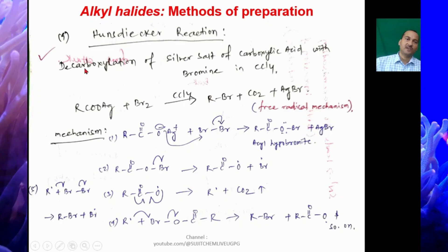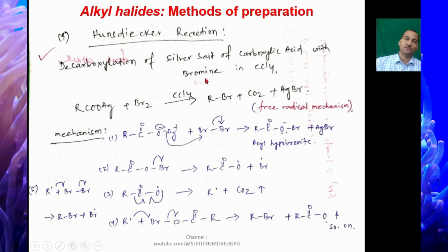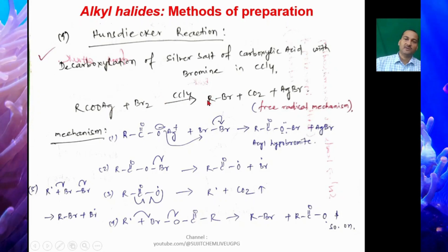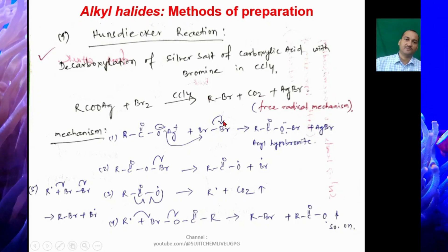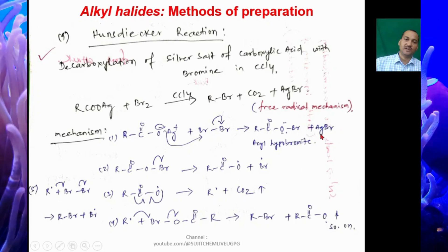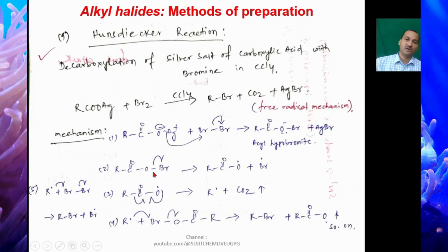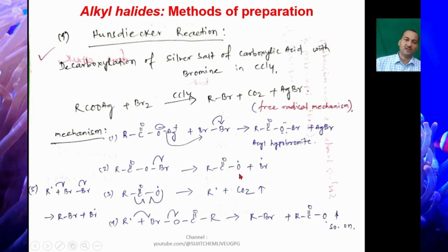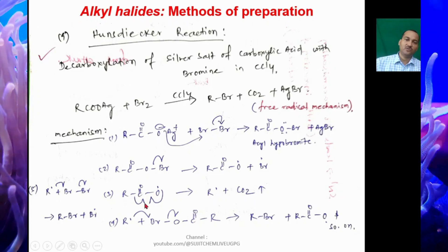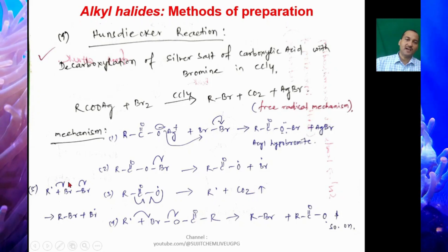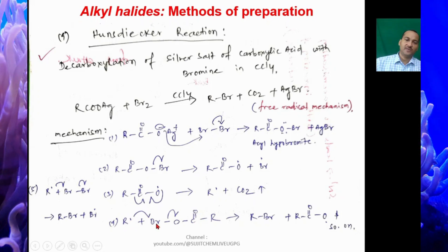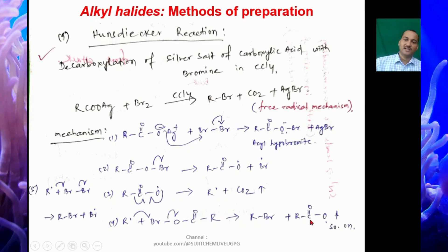The Hunsdiecker (Borodine) reaction involves decarboxylation of the silver salt of a carboxylic acid with bromine in carbon tetrachloride: RCOOAg + Br2 in CCl4 gives RBr + CO2 + AgBr. It follows a free radical mechanism. RCOOAg reacts with Br2 to give acyl hypobromite RCOOBR plus AgBr. This undergoes homolytic cleavage to give RCOO• and Br•. RCOO• loses CO2 by homolytic cleavage to give R• plus CO2. R• combines with Br• to give RBr, or R• can abstract Br from the acyl hypobromite complex, regenerating RCOO• and continuing the chain.